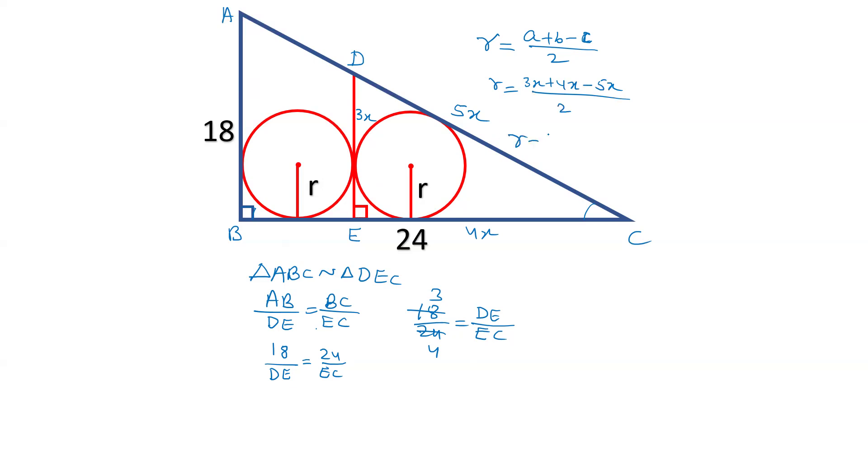So the radius will be 3 plus 4, 7x minus 5x by 2. The radius will be 7x minus 5x, which is 2x by 2. So R will be equal to x.